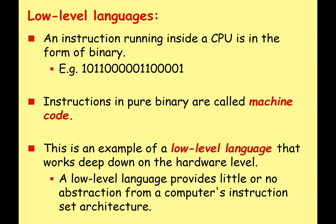Let's start by looking at low-level languages. An instruction running inside a CPU is in binary — a sequence of ones and zeros. When we give the computer instructions in pure binary we call this machine code or machine instructions. We can call this a low-level language because it works deep down at the hardware level. A low-level language provides little or no abstraction from a computer's instruction set architecture — the limited set of instructions built into a CPU — and it can only work with those specific instructions.